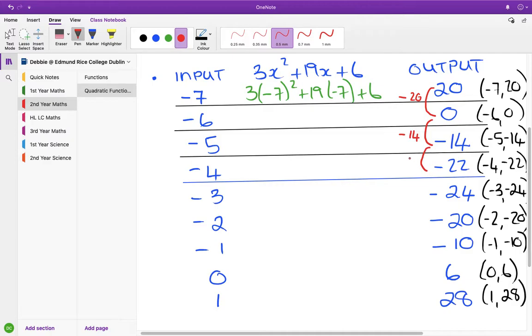From minus 14 to minus 22, that's minus 8. From minus 22 to minus 24 is minus 2. From minus 24 to minus 20 is plus 4. From minus 20 to minus 10 is plus 10. Minus 10 to 6, that's plus 16. And from 6 to 28 is plus 22.